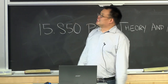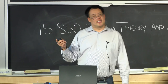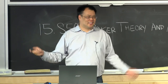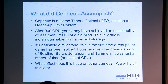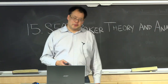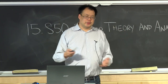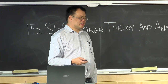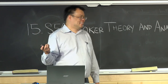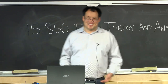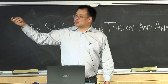Let's talk about what Cepheus accomplished. It's a game theory optimal solution to heads-up limit hold'em. After a few years, they achieved an exploitability of less than 1/1000th of a big blind. So it's not a true perfect optimal solution — you can still exploit it for about 1/1000th of a blind per hand. However, there are probably better games. This is like 1/2000th of a big bet. You could actually play heads-up for 50 years at normal speed and still have some probability of losing.